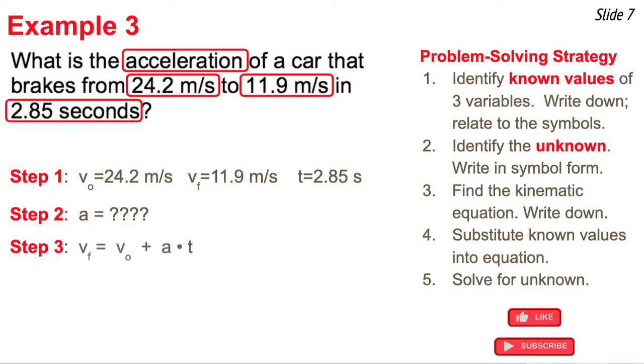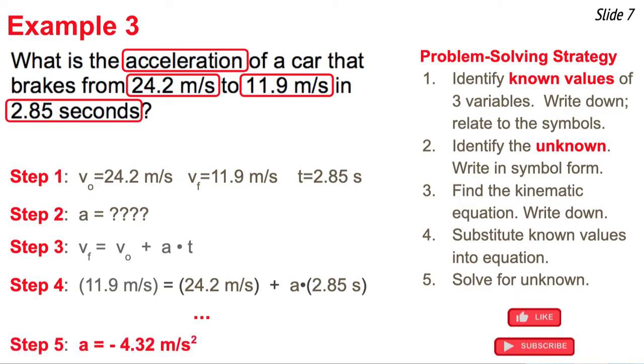And I'm going to take known values of VO, VF, and T, and substitute it into the equation. There's my substitution. Now I want to perform some algebra and solve for A. As far as the algebra goes, that involves isolating the A term, the acceleration term, by itself on the right side of the equation. So I have to subtract 24.2 meters per second from each side. The left side would become 11.9 minus 24.2. That ends up being a negative value. And the right side is positive 2.85 times A. Now when I divide through each side by 2.85, I end up getting my acceleration answer, and it is negative 4.32 meters per second squared.